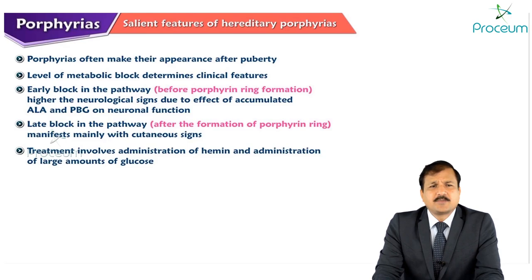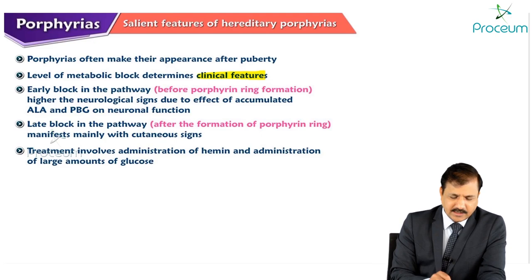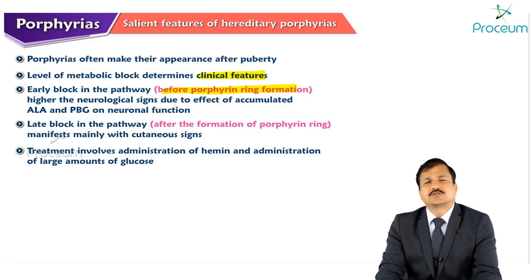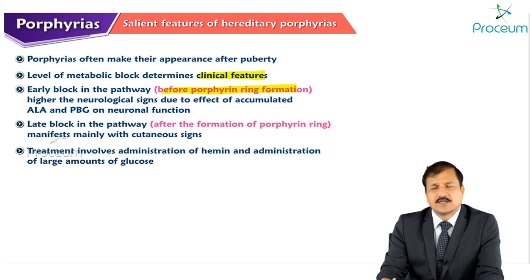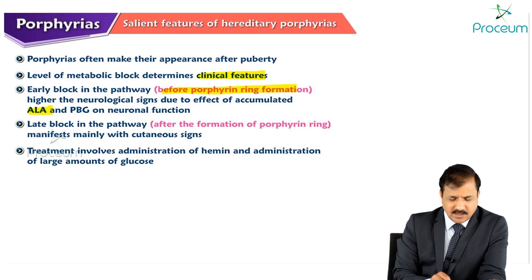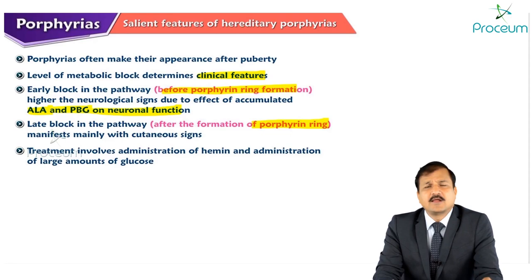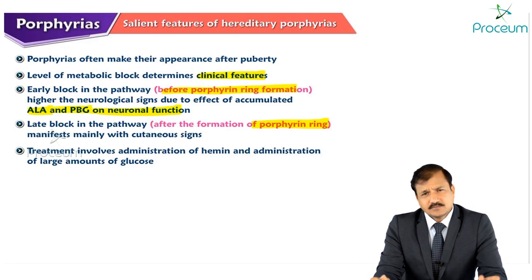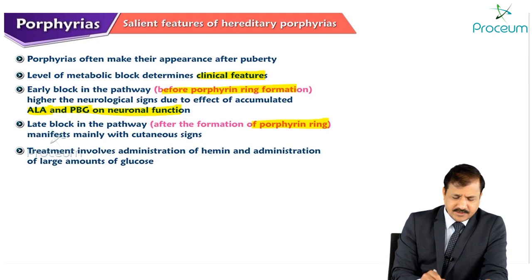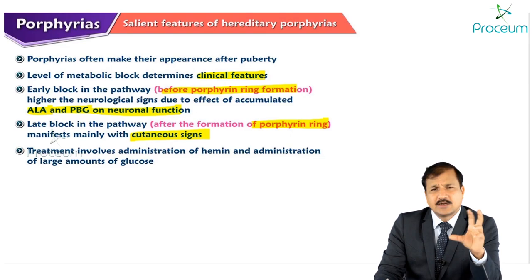Porphyrias often manifest after puberty and the level of metabolic block determines clinical features. An early block in the pathway, before porphyrin ring formation, leads to higher neurological signs due to accumulation of ALA and porphyrinogen molecules affecting neuronal function. If the block is later in the pathway — after formation of uroporphyrinogen 3 — it will manifest mainly with cutaneous signs.